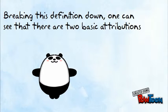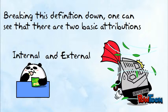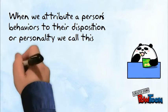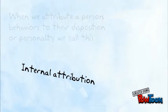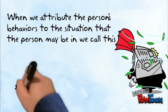Digging into this definition, one can see that there are two basic attributions: internal and external. When we attribute a person's behavior to their disposition or personality, we call this internal attribution. When we attribute the person's behavior to the situation that the person may be in, we call this external attribution.